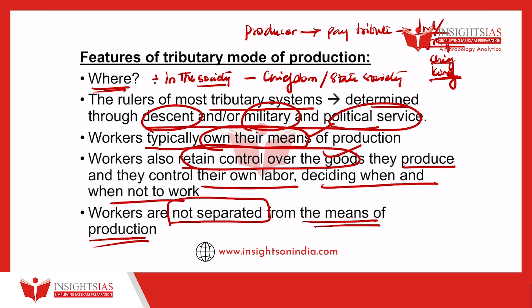Tributary mode of production is characteristic of pre-capitalistic and pre-industrial state-level societies found in Europe, Asia, Africa, and the Americas. Historical examples include feudal European society, medieval Japanese society, the Incan empire, and imperial China — all these societies showed tributary mode of production. Even in India, tribal societies with chiefdom structures also showed tributary mode of production.